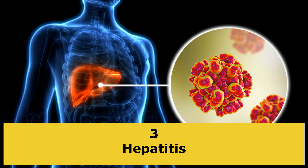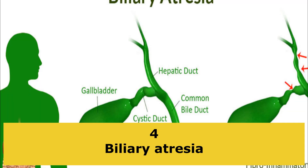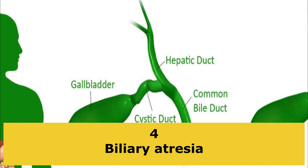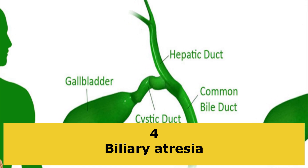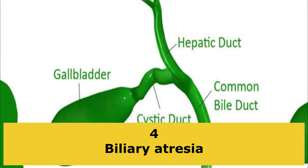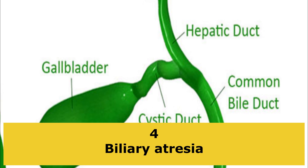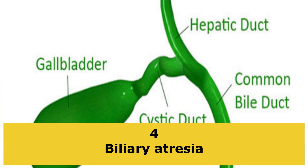Hepatitis. Hepatitis is an inflammation of the liver. There are several types of hepatitis. Biliary atresia. This is a rare condition that occurs when there is a blockage in the tubes that carry bile from your liver to your gallbladder. It occurs in infants.